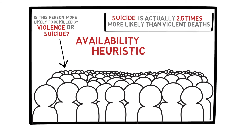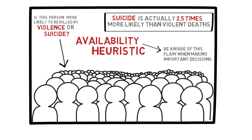Availability heuristics means that when something comes to mind more easily — when you have heard about more cases of it — you assign it a higher probability. In this case, while watching the news, you tend to hear more about violent crimes than suicides, so you would assign the former a higher probability. This concept is very important. In situations like this, when we have an important problem, it is crucial that we be aware of this kind of bias or flaw in our intuitive thinking, and if we can check the actual statistics, we should do so in order to avoid making a decision based on false assumptions.